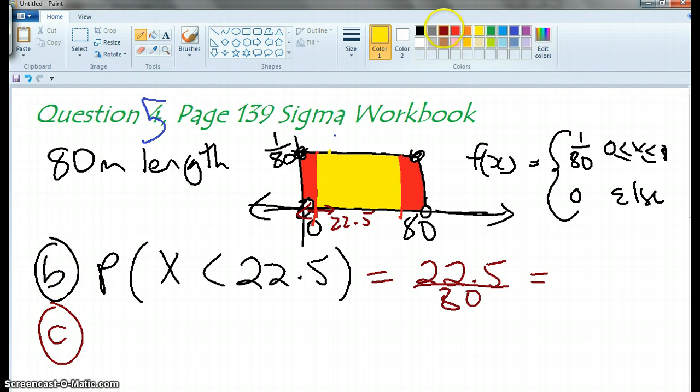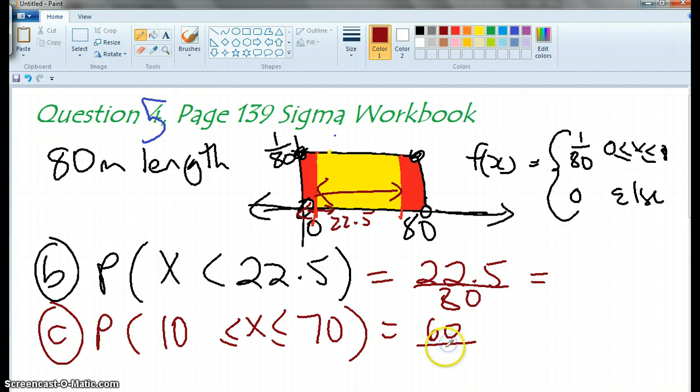So what are we going to write here? The probability x is going to be in the middle, and what are my two ends? 10 and 70. So what's the width of my rectangle? 60. Yeah, 70 minus 10 is 60, and times 1 over 80, which is the same as divide by 80. Okay?